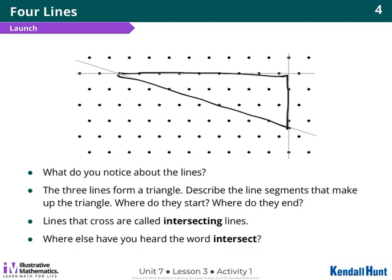The diagonal line is touching less dots than the straight one. I wonder why that is. So they start at each point, like each corner. I would say they start at a point and they end at a point, right?